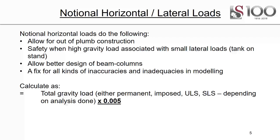Notional horizontal loads simulate a whole bunch of things. They allow for out-of-plumb construction — not perfectly straight. They provide safety when high gravity loads are associated with small lateral loads, like a tank-on-stand. If you have a column you think is perfectly straight with many thousand kilonewton point loads sitting on top of it, even small imperfections will introduce quite high moments. So it's useful to have a small amount of sway accounting for that imperfection. They also allow for design of beam-columns and act as a fix for all kinds of inaccuracies and inadequacies in models.